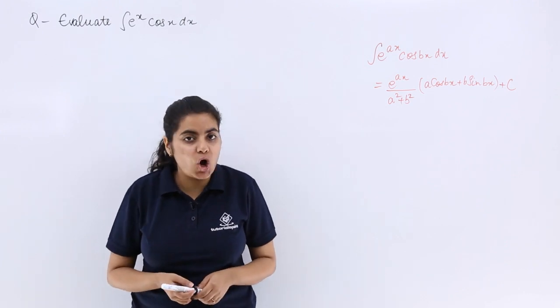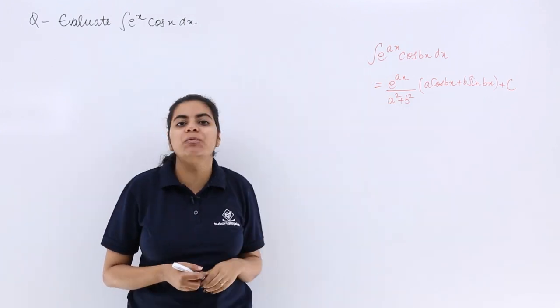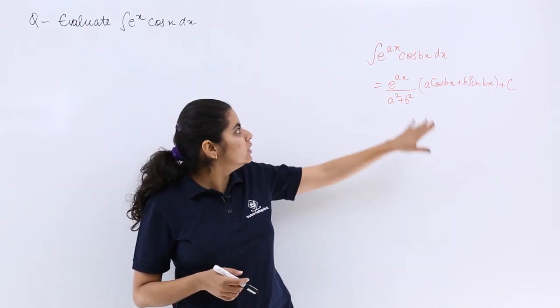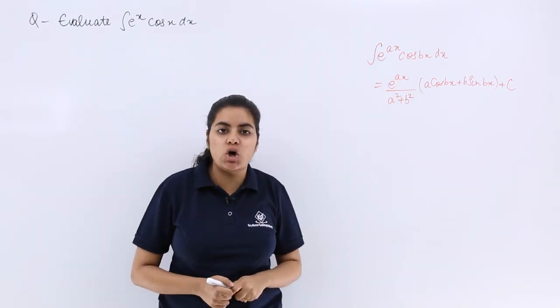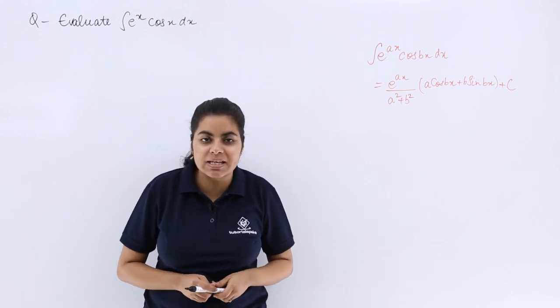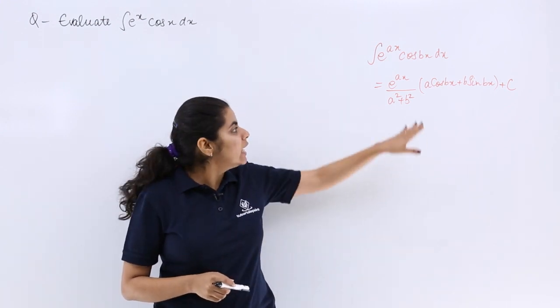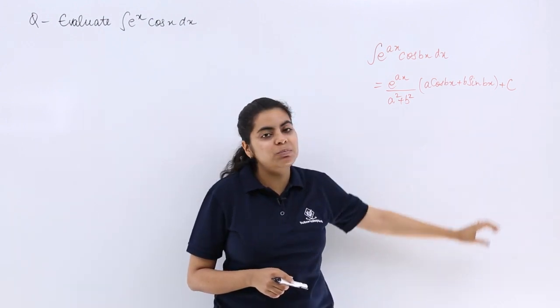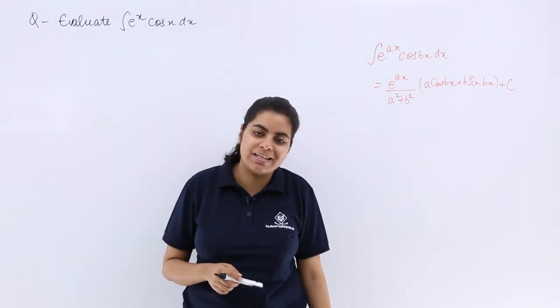Let's see a problem based on the form that we studied in the previous video. So we know the formula to evaluate the integral of e raised to the power ax cos bx with respect to x would be e raised to the power ax upon a square plus b square, in brackets a cos bx plus b sin bx plus c.